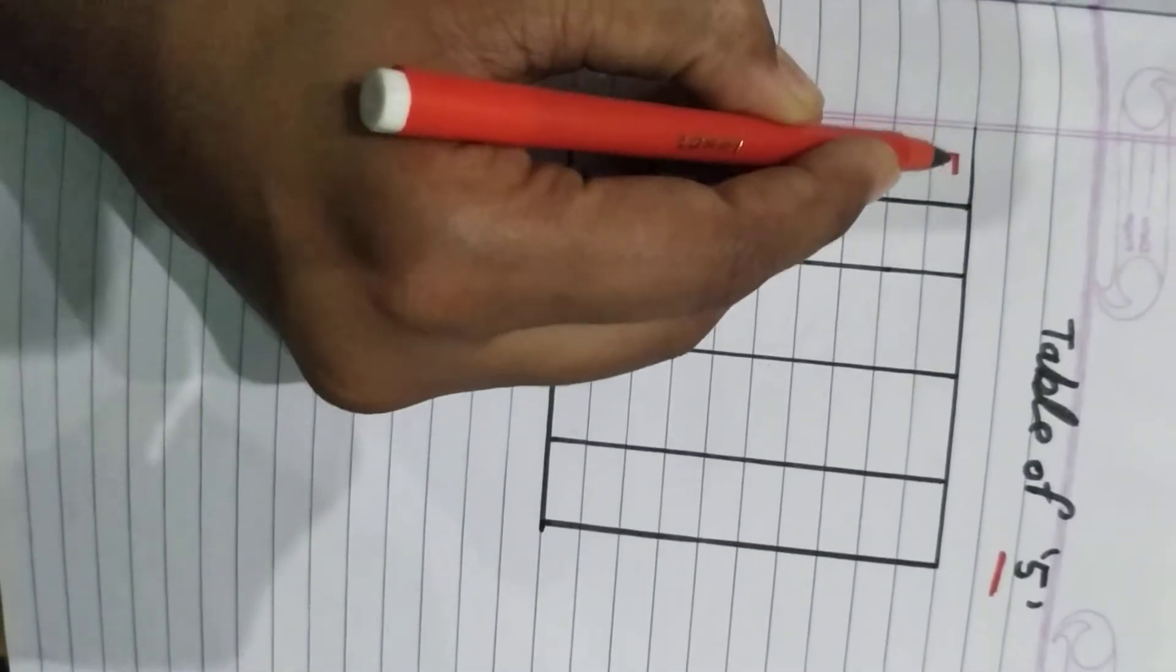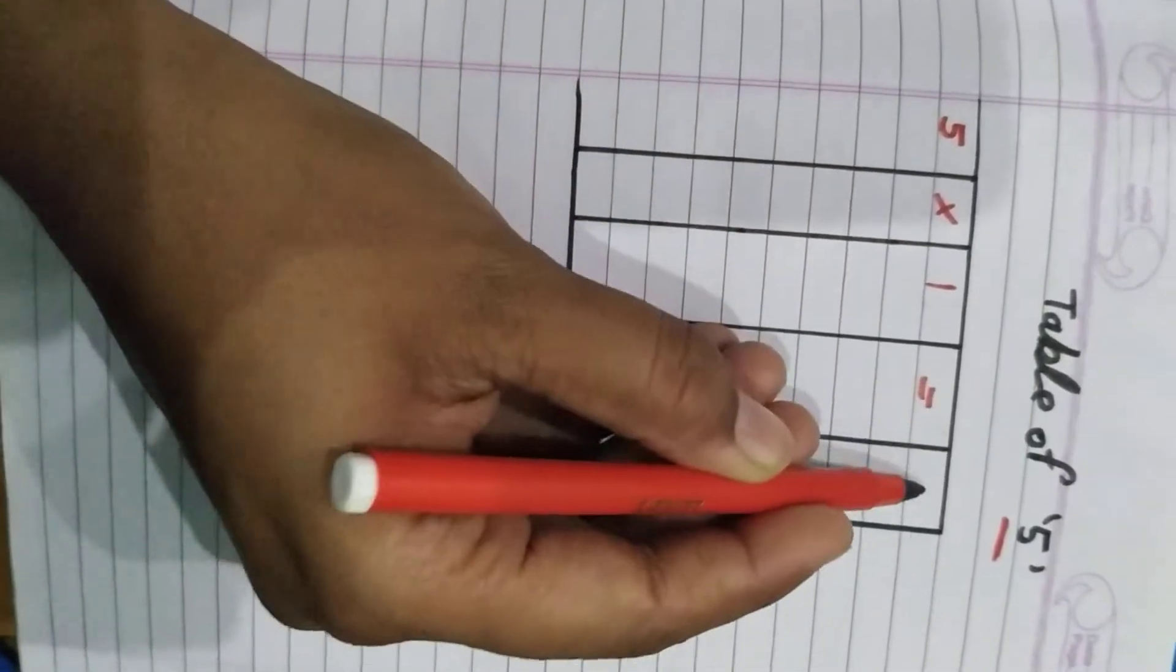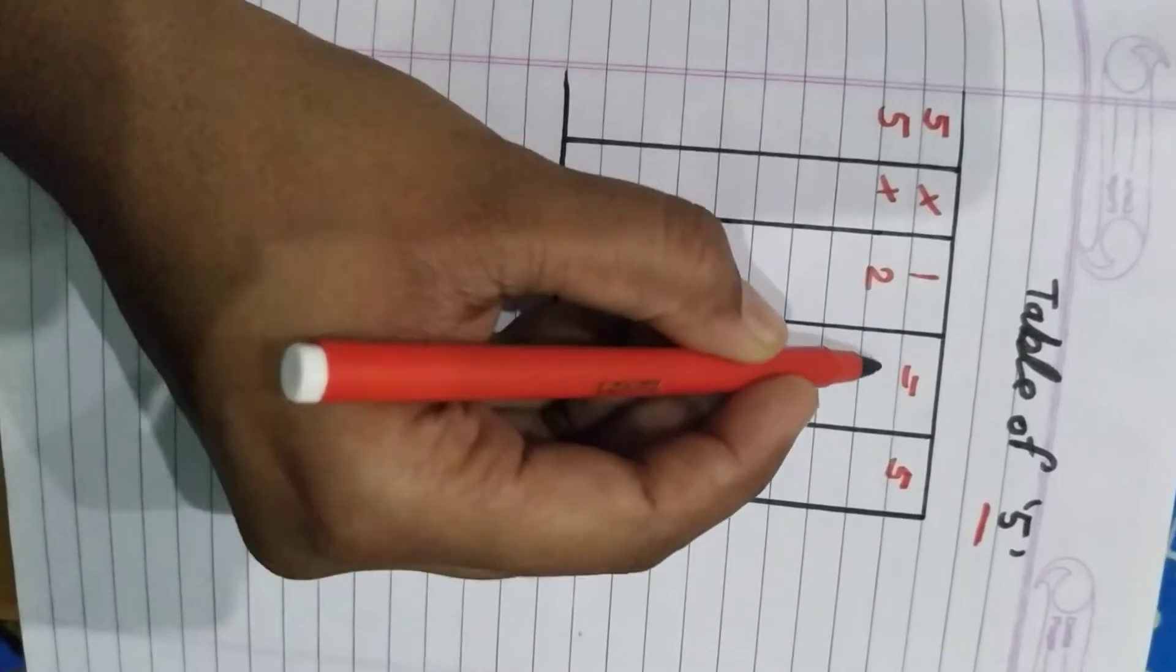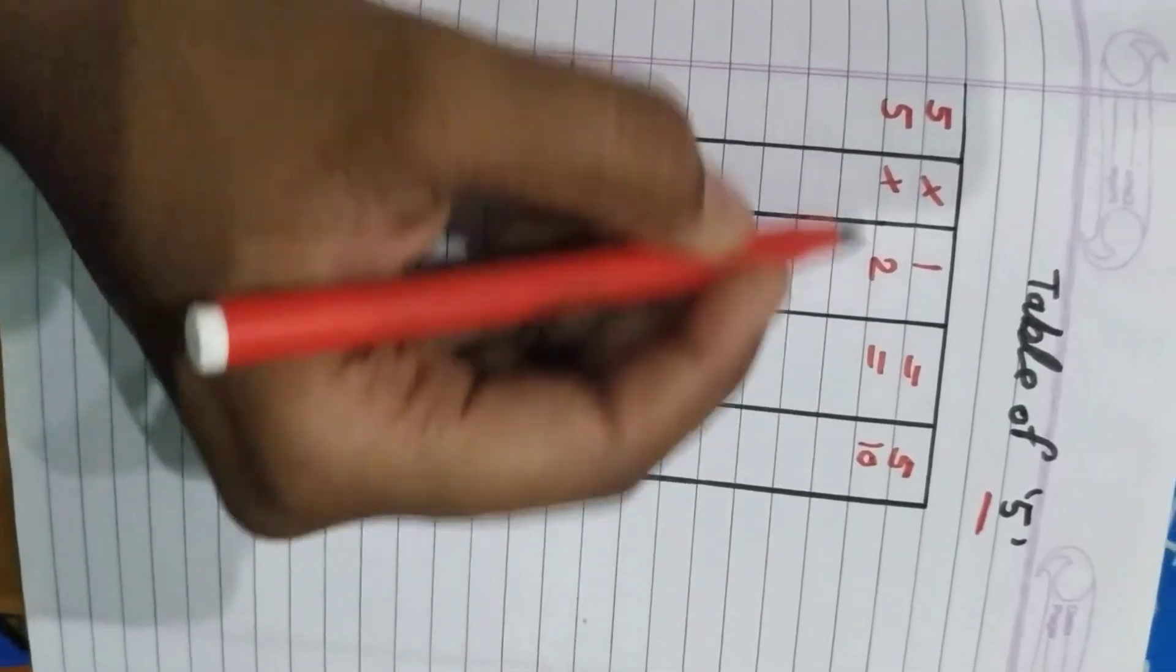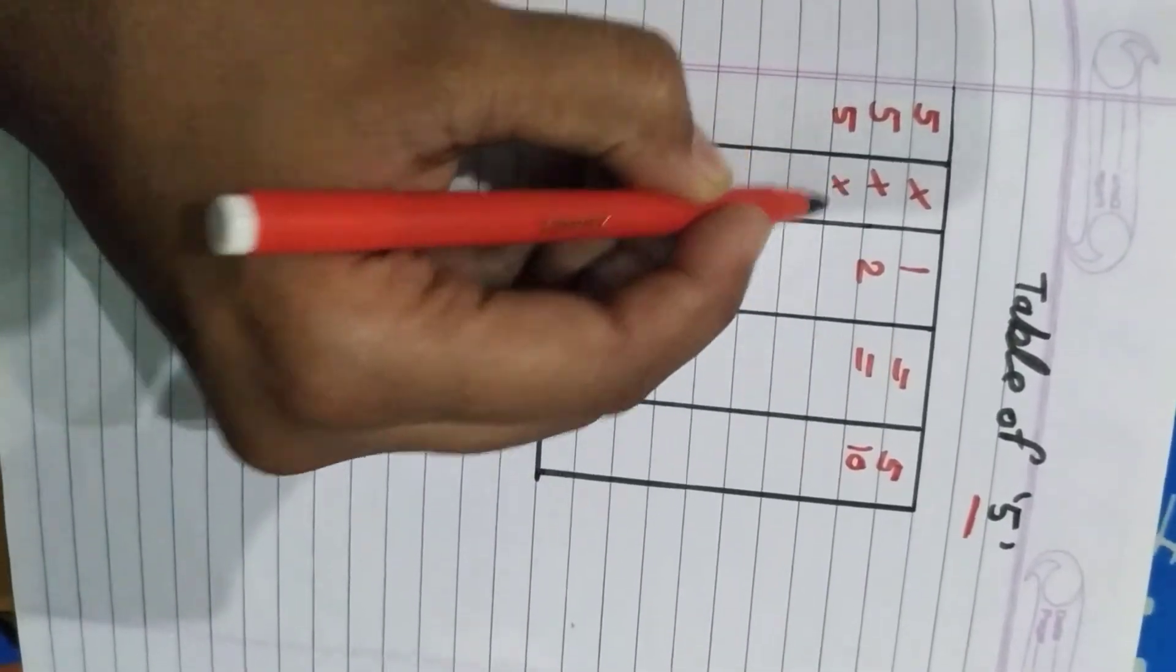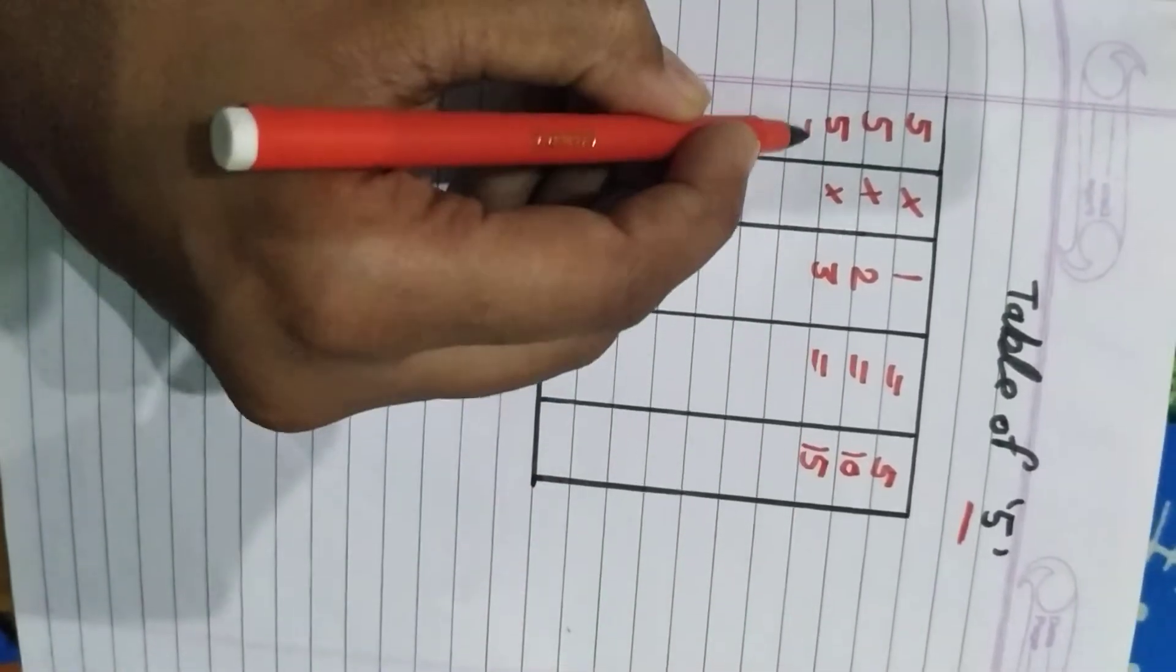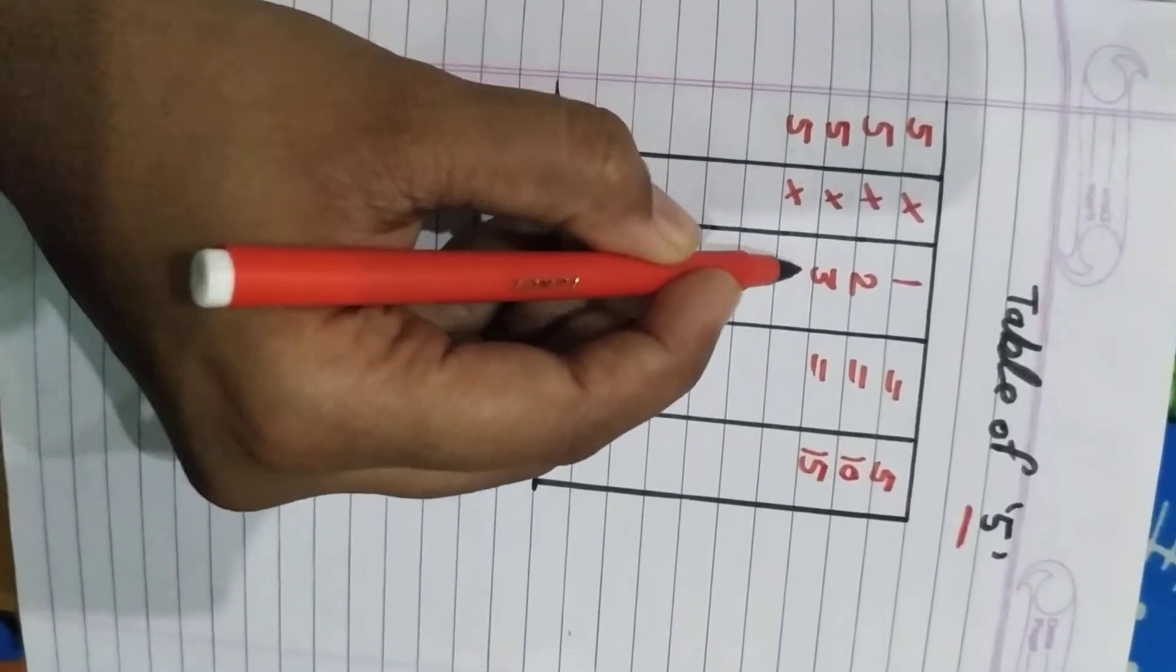Five one ja five. Five two ja ten. Five three ja fifteen. Five four ja twenty.